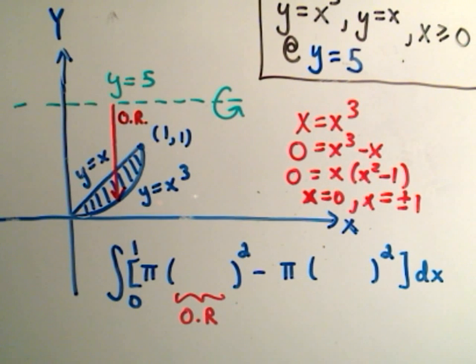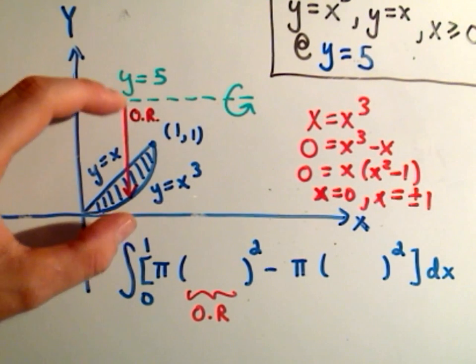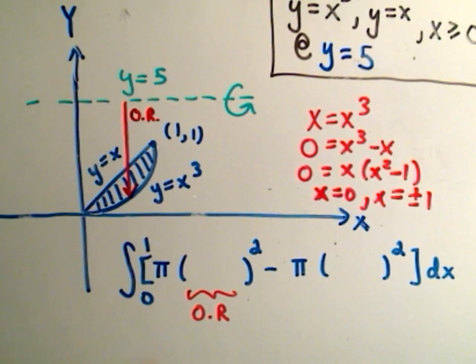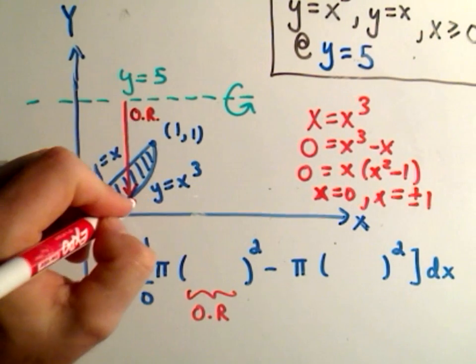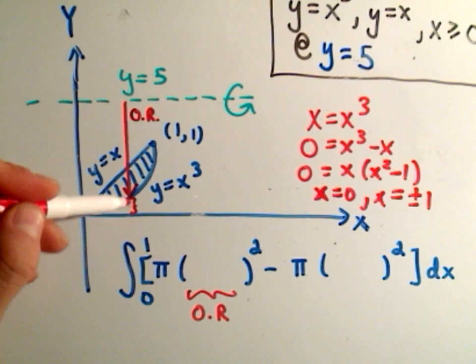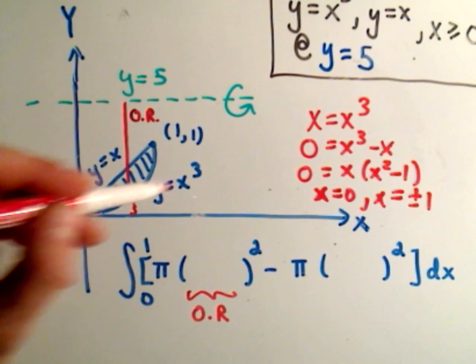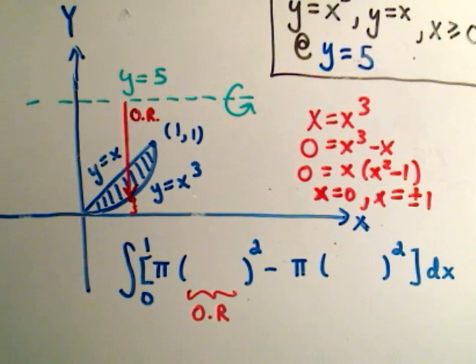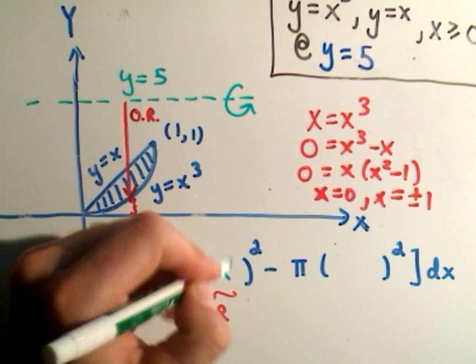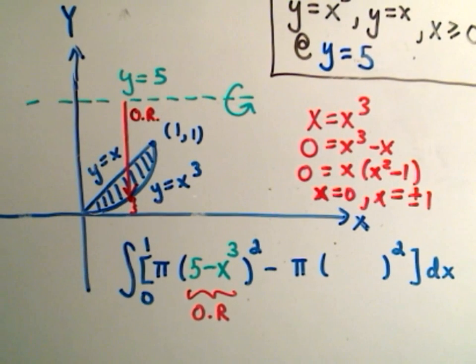So again, I'm trying to think what's the length of this arrow. Well, if it went from y equals 5 to the x-axis, it would have a length of 5. But I'm not going all the way there. I'm losing a little bit. Well, this little bit that I'm leaving off, again, comes from the function, which is x cubed. So this outer radius is actually going to be 5 minus that curve, which is x cubed, quantity squared.